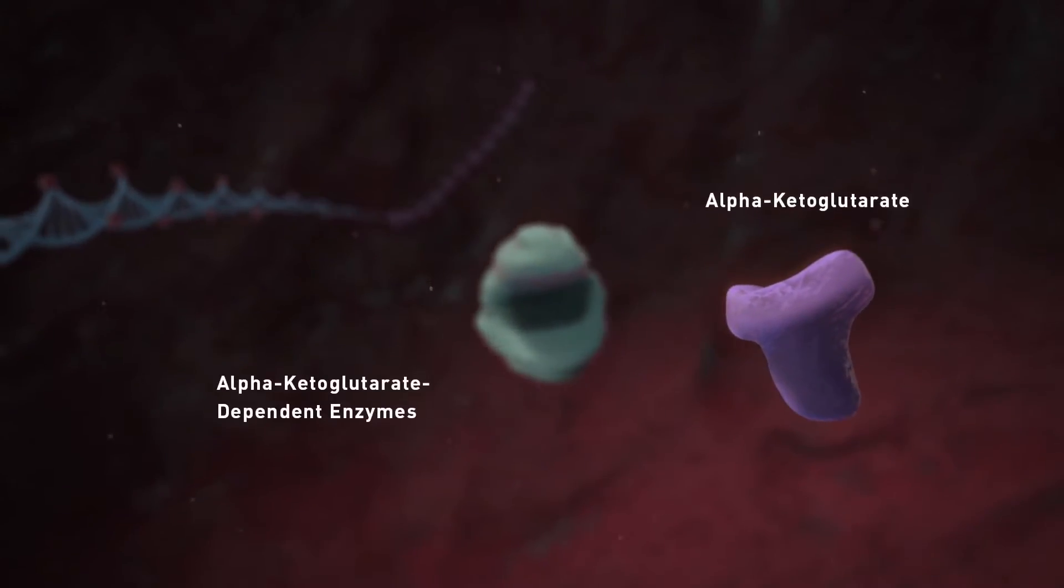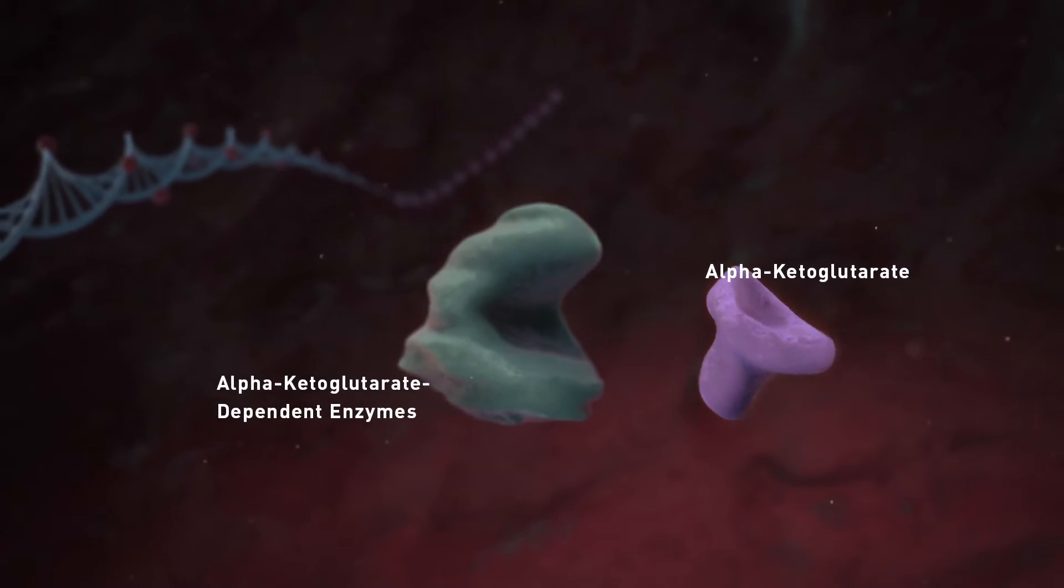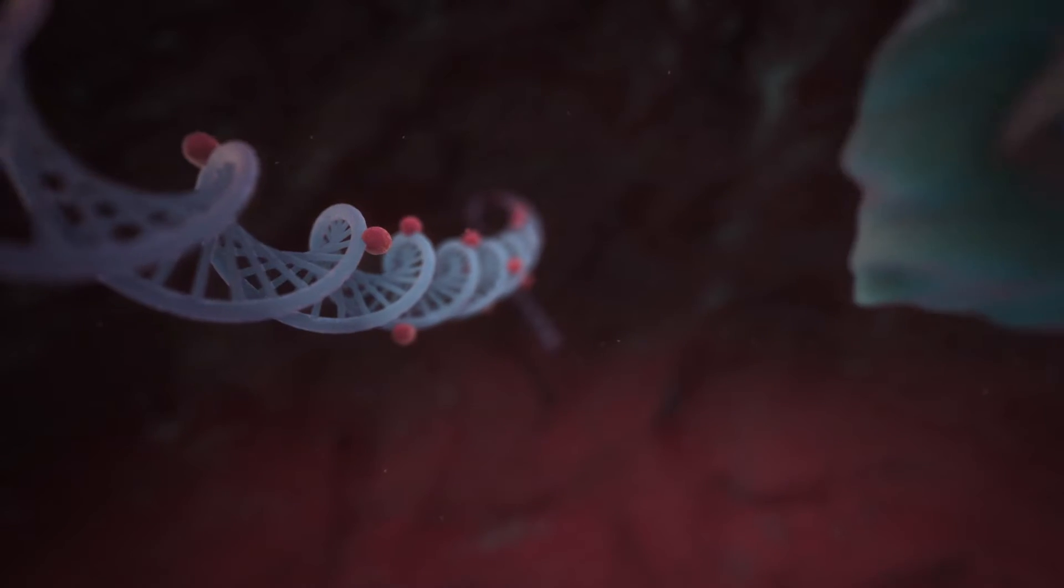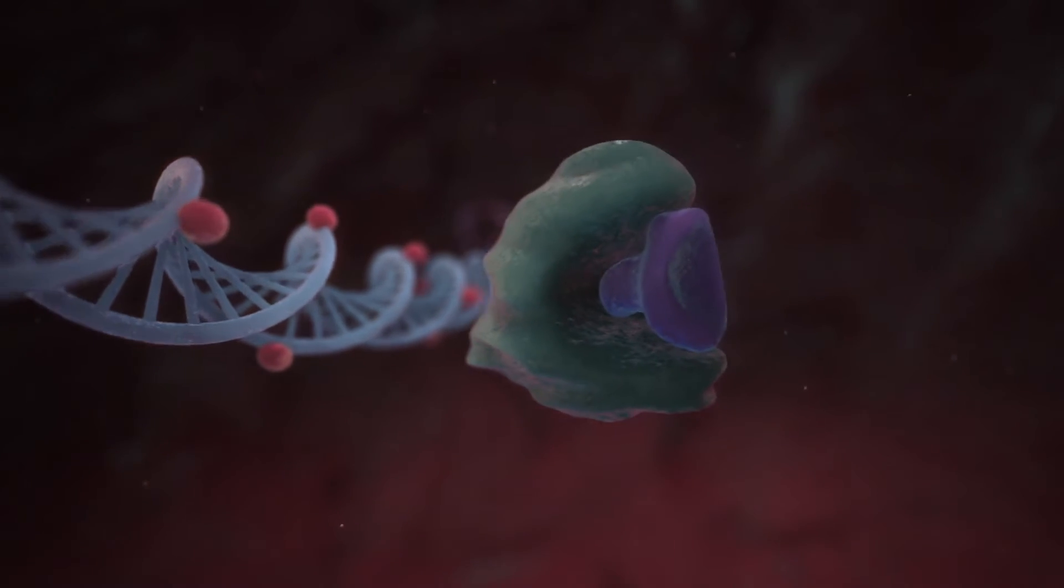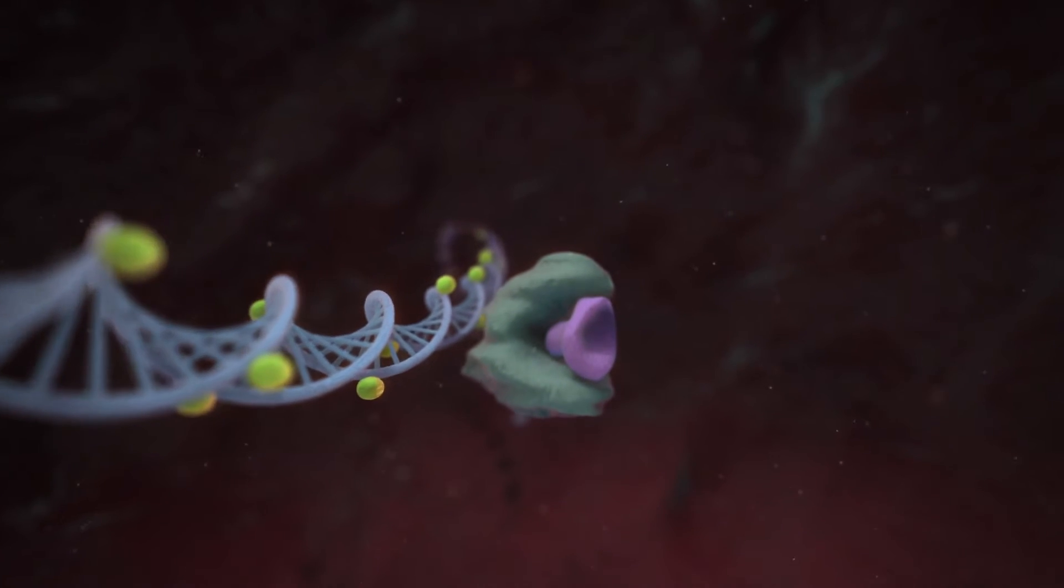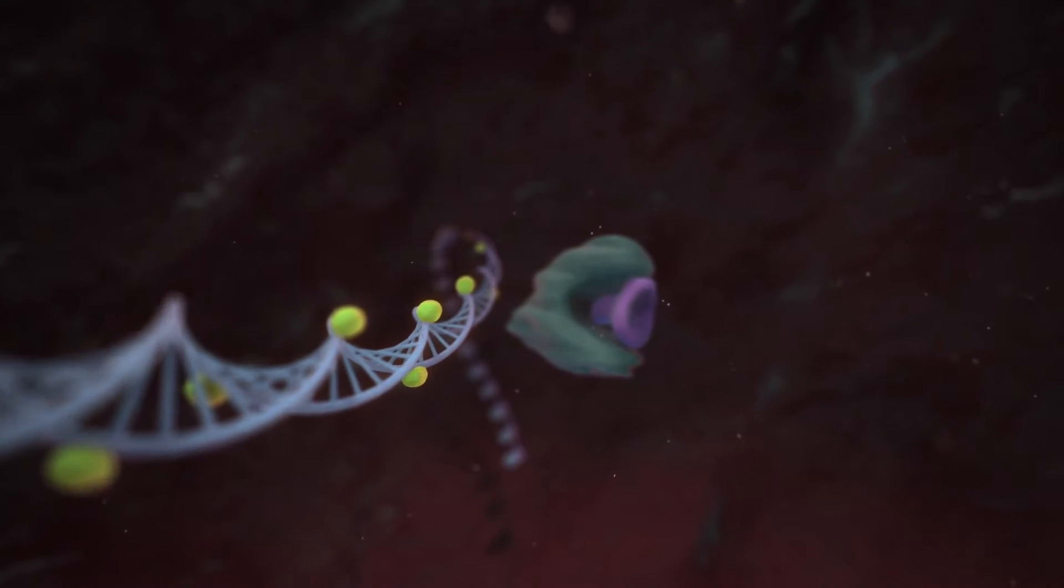In addition to its role in metabolism, alpha-ketoglutarate is an important substrate for cytoplasmic and nuclear alpha-ketoglutarate-dependent enzymes to carry out their normal functions. In the nucleus, these enzymes help regulate DNA and histone methylation patterns, which turn the expression of genes on and off, including genes critical to cellular differentiation.